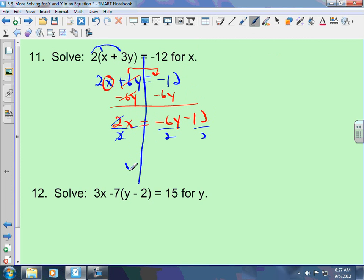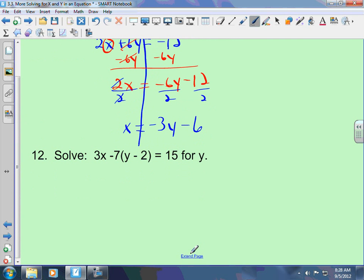2 over 2 is 1. 1x and x are the same thing. Negative 6 divided by 2 is negative 3y. Negative 12 divided by 2 is negative 6. Number 12 is the same thing, except you have a 3x over here. Not a big deal. And you're going to get a positive 14, so you'll move that over. Try to do number 12. If you have any questions, please come and see me.